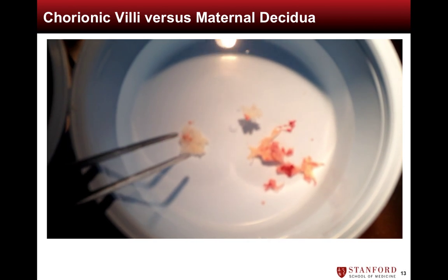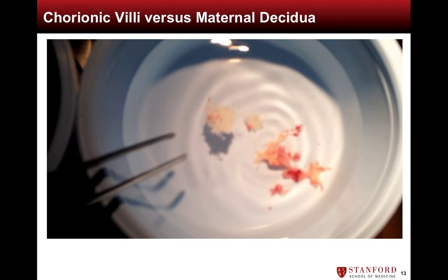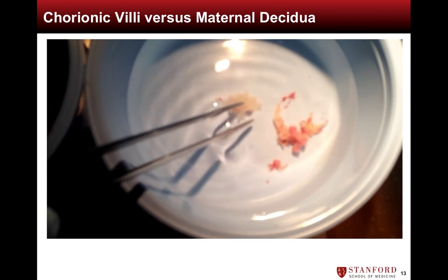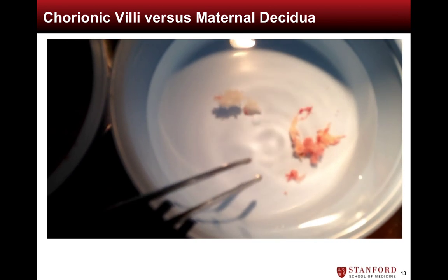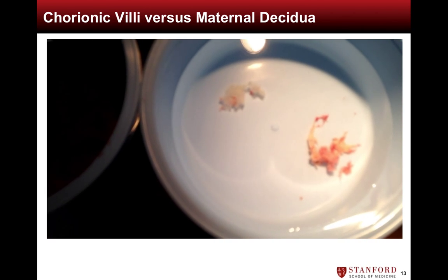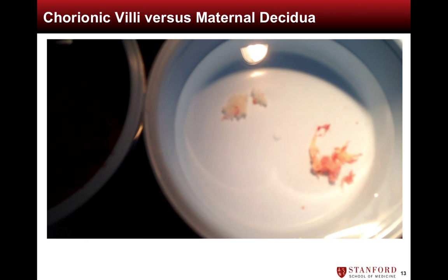Identification of villi and decidua can be further confirmed by comparing the densities of the two in normal saline. The villi on the left float, while the decidua on the right quickly sink. Once villi have been isolated from the miscarriage specimen, the next and final step is dissection of decidual tissue off the villi.